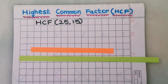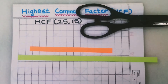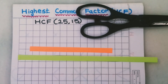Finding the highest common factor of two given numbers by the paper cutting method. In the paper cutting method, you need papers of two different colours and scissors.